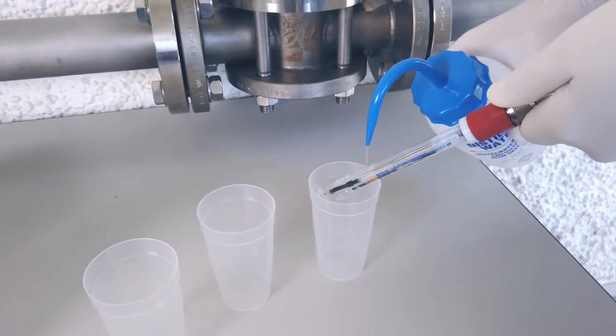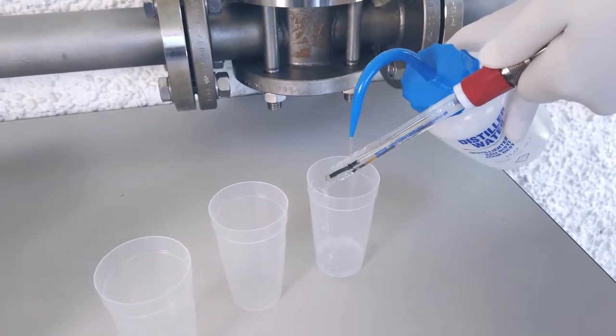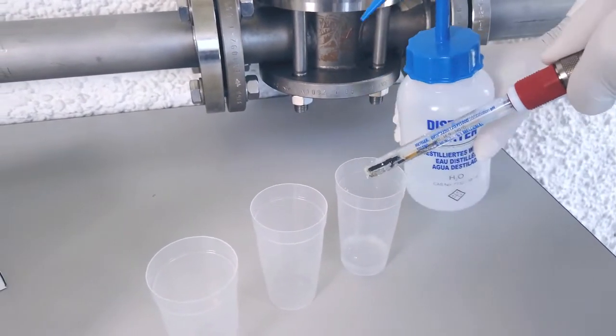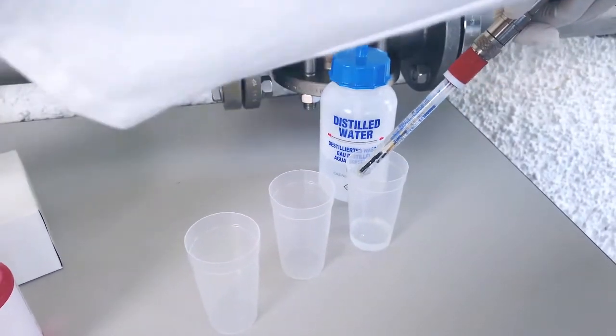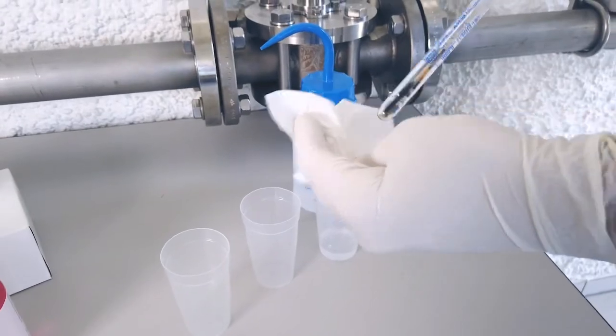Before you start to calibrate, you need to rinse the sensor with distilled water to remove any possible contamination, then dry it. Don't rub the sensor, but gently pat it dry. Rubbing can induce an electrostatic charge which can affect the measurement.